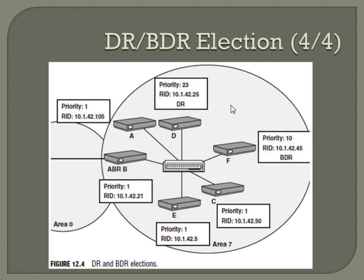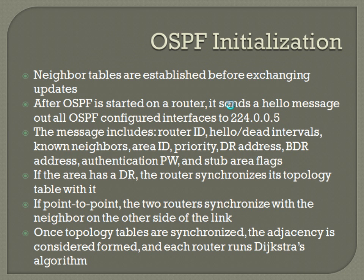OSPF initialization: the first thing that happens is neighbor tables are established before exchanging updates. All the routers basically introduce themselves to each other, give their router IDs, and each individually builds neighbor tables. After OSPF is started on a router, it sends a hello message out all OSPF-configured interfaces to 224.0.0.5, which is the multicast address that all OSPF routers are listening on. The message includes the router ID, the hello and dead intervals, and the known neighbors.